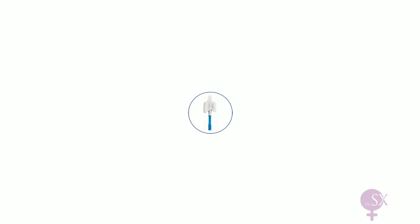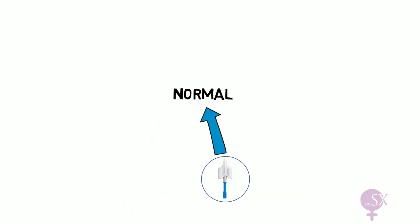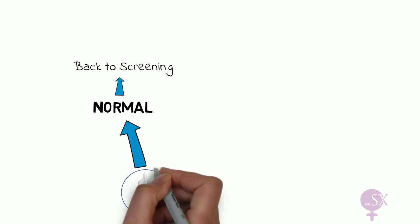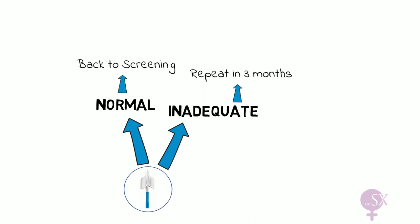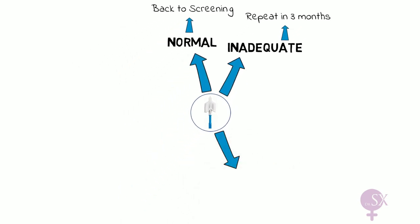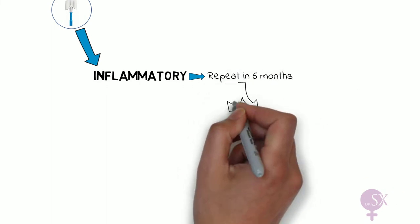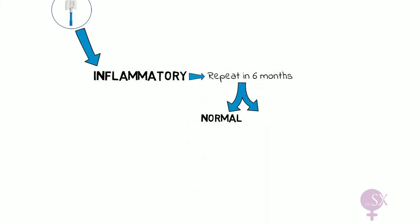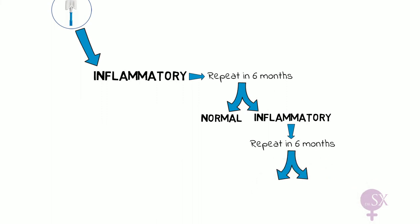Once an invite has been sent and the smear test performed, here's how we manage the results. If we have a normal smear, the woman is sent back to routine screening. If the smear is inadequate, the smear is repeated in another three months. If the smear is inflammatory, the smear is repeated in six months. If the repeat smear is normal, the patient can return to routine screening. But if inflammatory again, the smear is repeated again. If the second repeat smear is inflammatory again, then the patient would need a colposcopy.